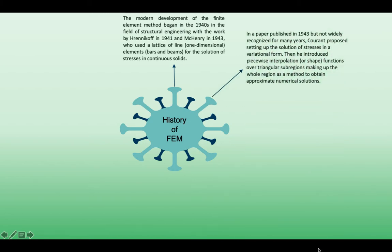In a paper published in 1943 but not widely recognized for many years, Courant proposed setting up the solution of stresses in a variational form. Then he introduced piecewise interpolation, or shape functions, over triangular subregions making up the whole region as a method to obtain approximate numerical solutions.